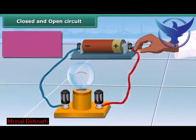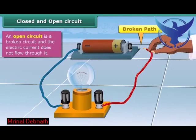Disconnect one of the wires. You will find that the path is broken now. Also, the bulb doesn't light up since electricity can't flow through this circuit. A broken path is known as an open circuit.